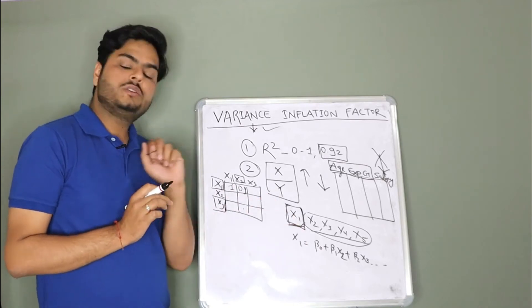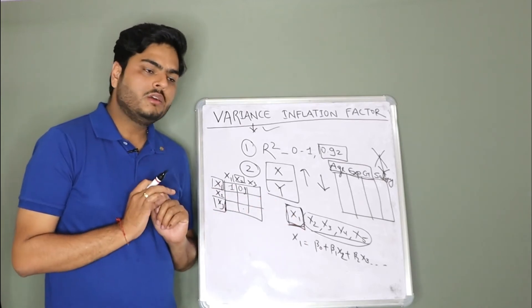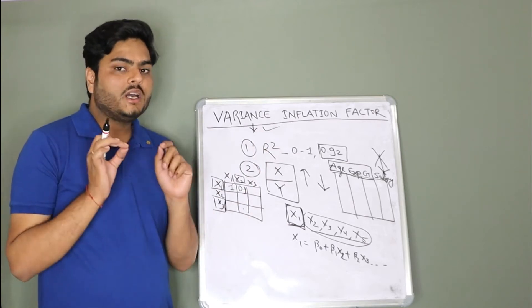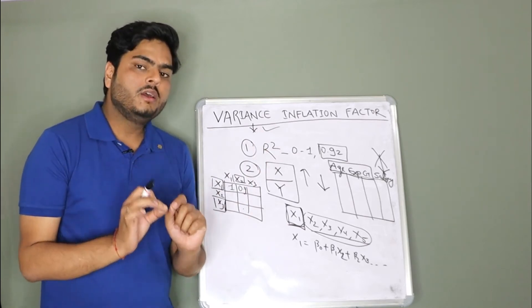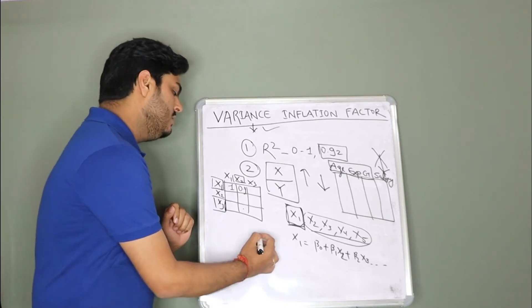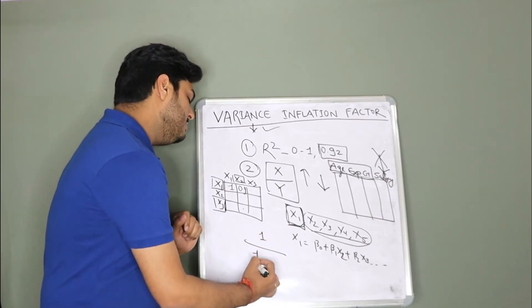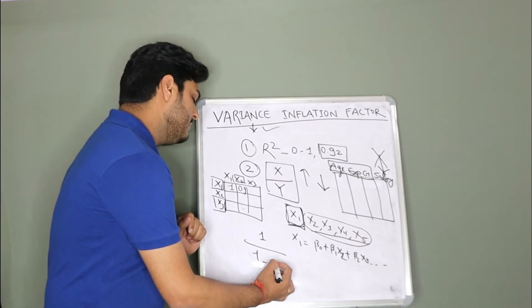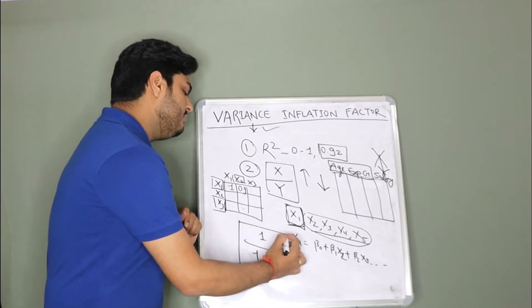Take one feature out, make that a separate model where this feature is a target variable and all other features are independent variables. Once we fit a regression model, we will have the R square. We will have this number R square. That R square will be taken and plugged in into VIF formula. What is the VIF formula? 1 by 1 minus R square. This is your VIF formula.